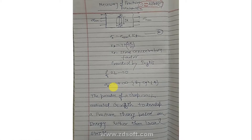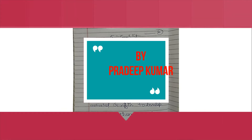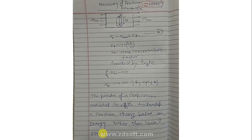Due to this limitation of solid mechanics, we have to think beyond the conventional way. The paradox of a sharp crack motivated Griffith to develop a fracture mechanics theory based on energy rather than local stress. Griffith came up with derived equations and said that local stress-based analysis would not be applicable when a sharp crack is initiated in any geometry.